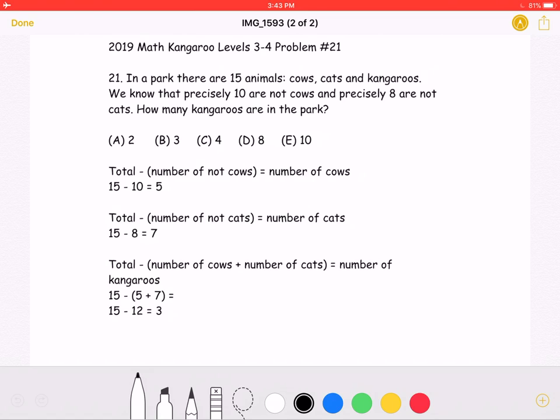Let's start by finding out the total number of cows. We can do this by taking the total number of animals, which the problem states is 15 animals, and subtract the number that are not cows. The problem says that precisely 10 are not cows. And by doing this, we should get the number of cows. So we take the total of 15, subtract 10 that are not cows, which means that there must be a total of 5 cows.